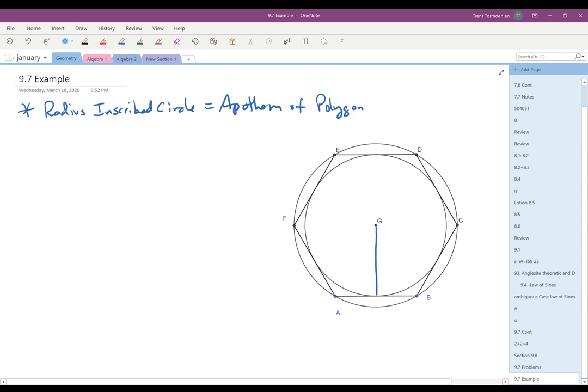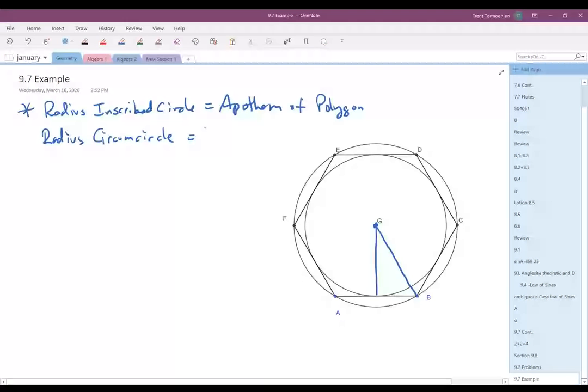Okay, and then the radius of the polygon, well if you look at it, G is the center of that circumscribed circle, the circle that's outside. Well, B is on that circle, so GB is the radius of the circle, but it's also the radius of the polygon. So the radius of the circumscribed circle, or what we call a circumcircle, equals the radius of the polygon. So you need to really keep this in mind when you're doing these problems.